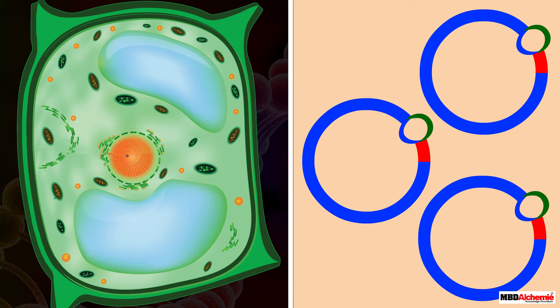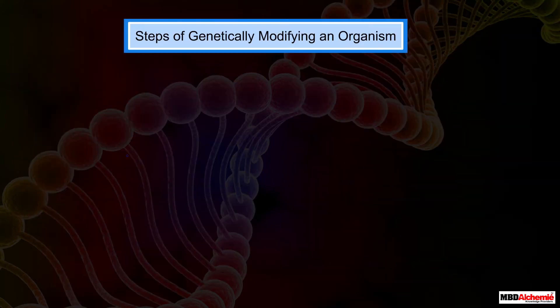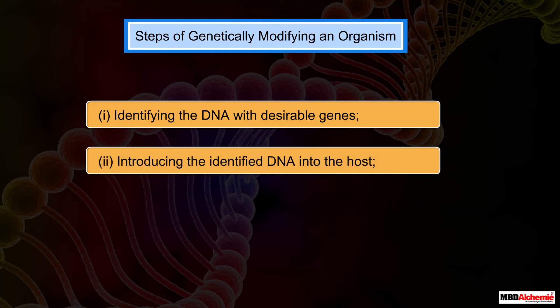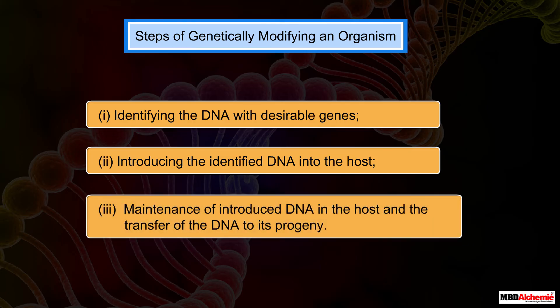This allows the alien DNA to multiply and be inherited along with the host DNA. This process can also be called cloning — making multiple identical copies of any template DNA. To sum up, there are three basic steps in genetically modifying an organism: identifying the DNA with desirable genes, introducing the identified DNA into the host, and maintenance of introduced DNA in the host and transfer of the DNA into its progeny.